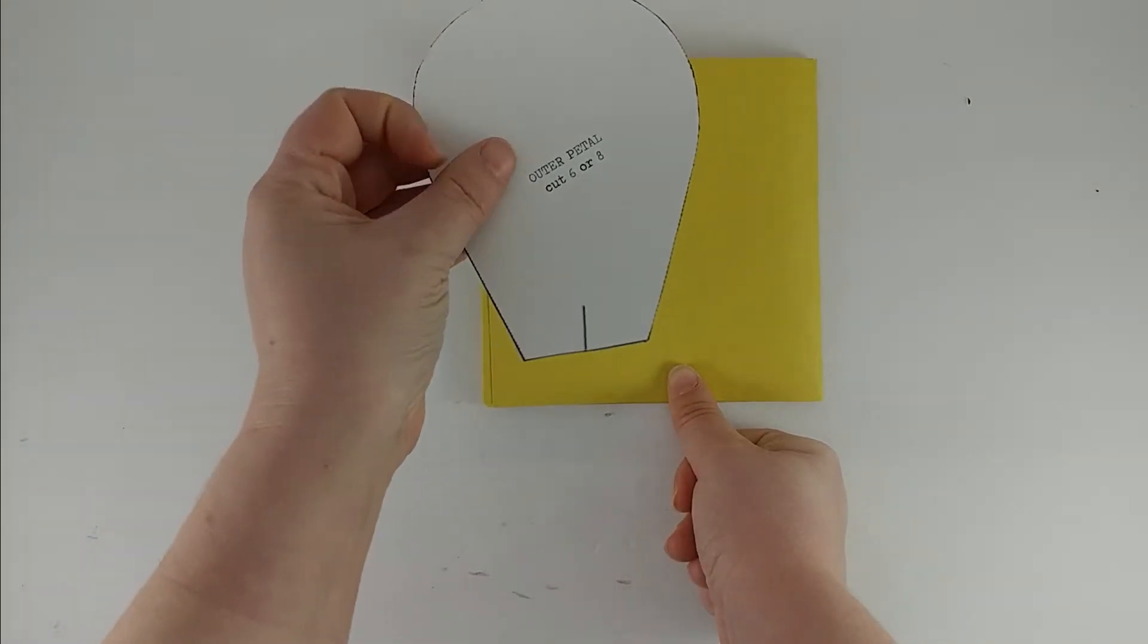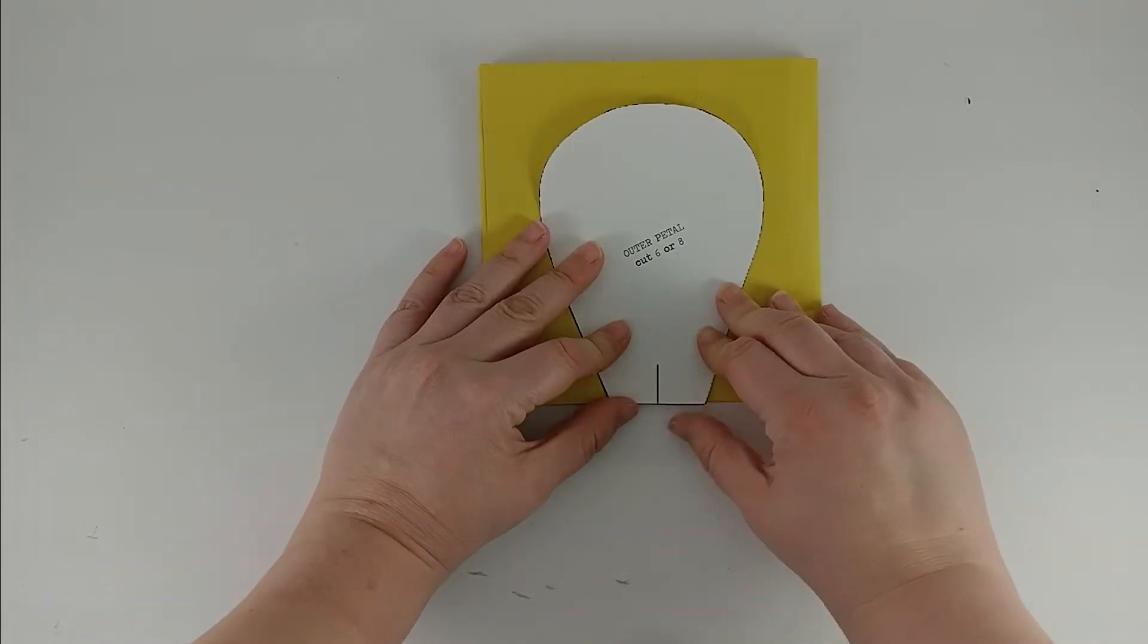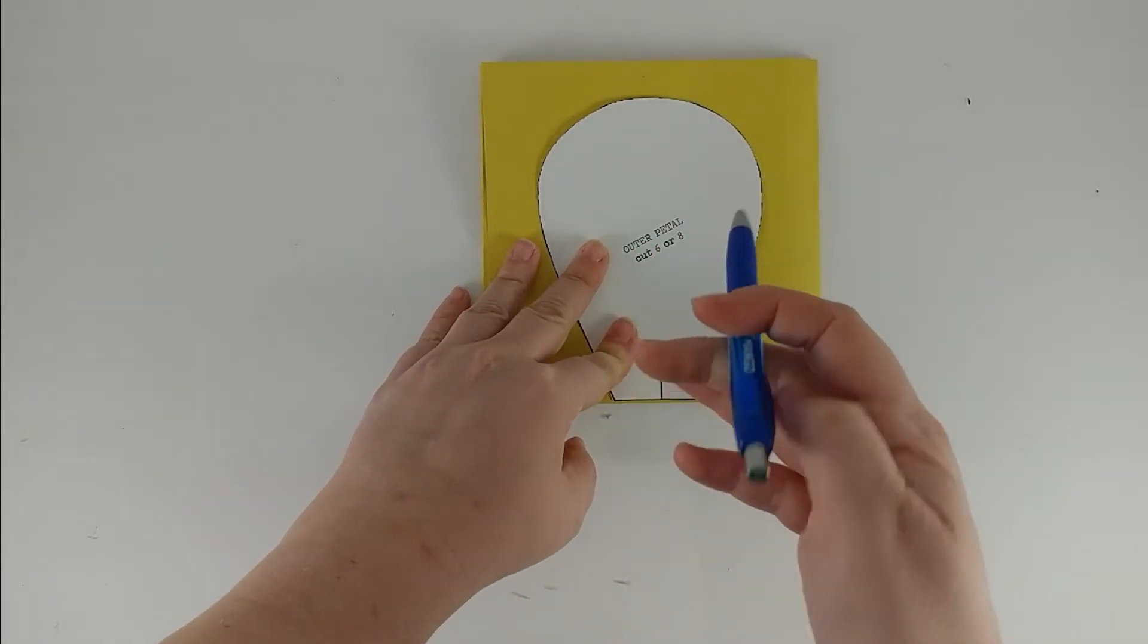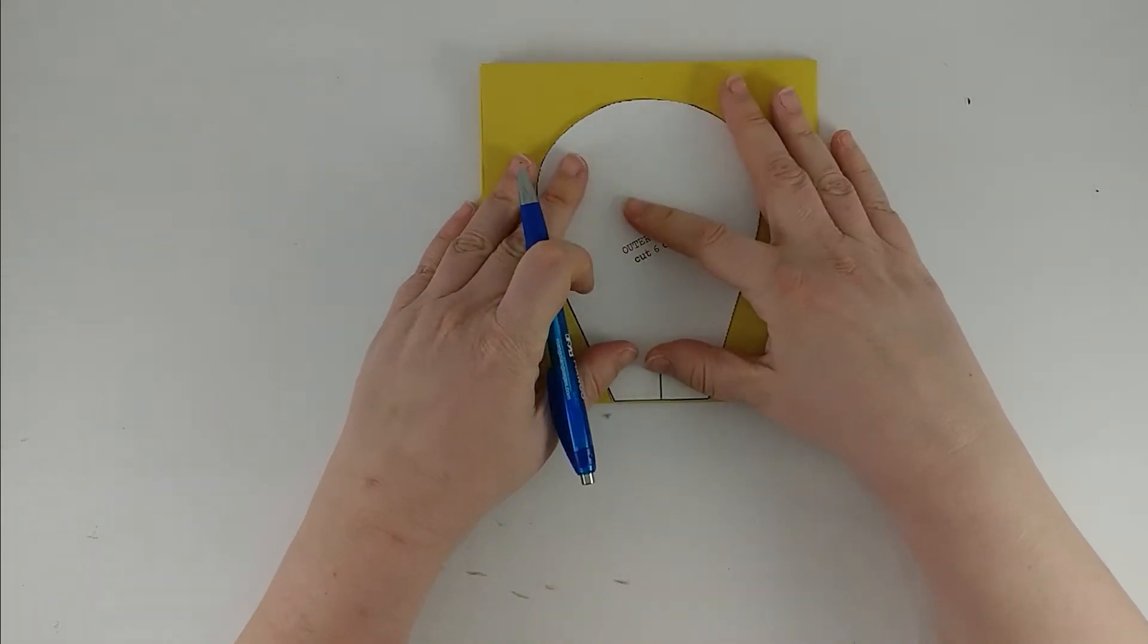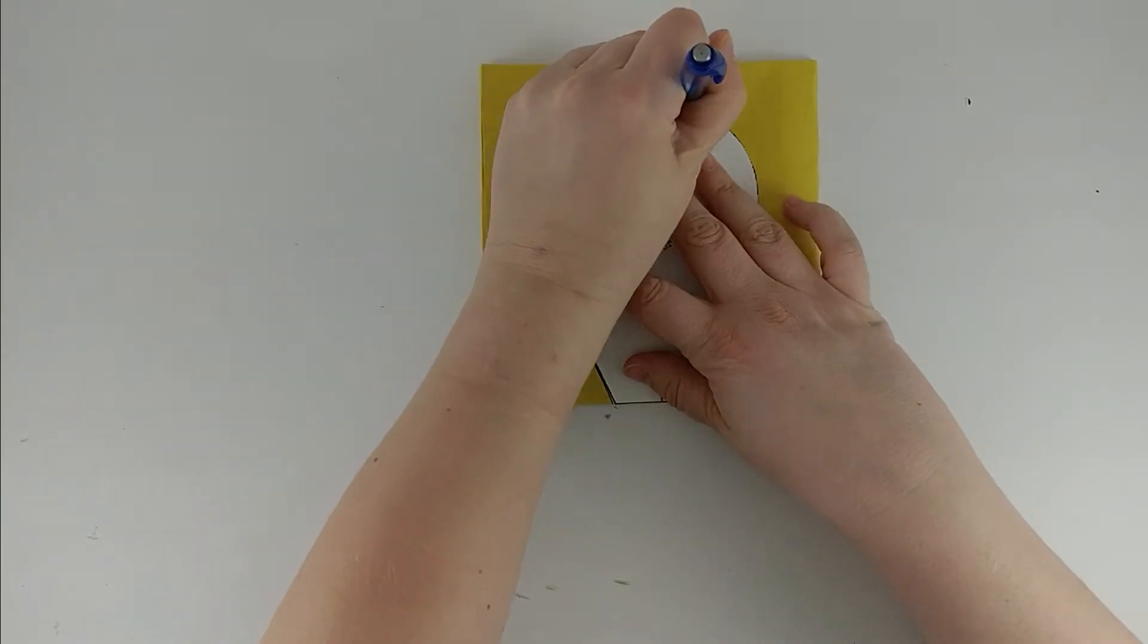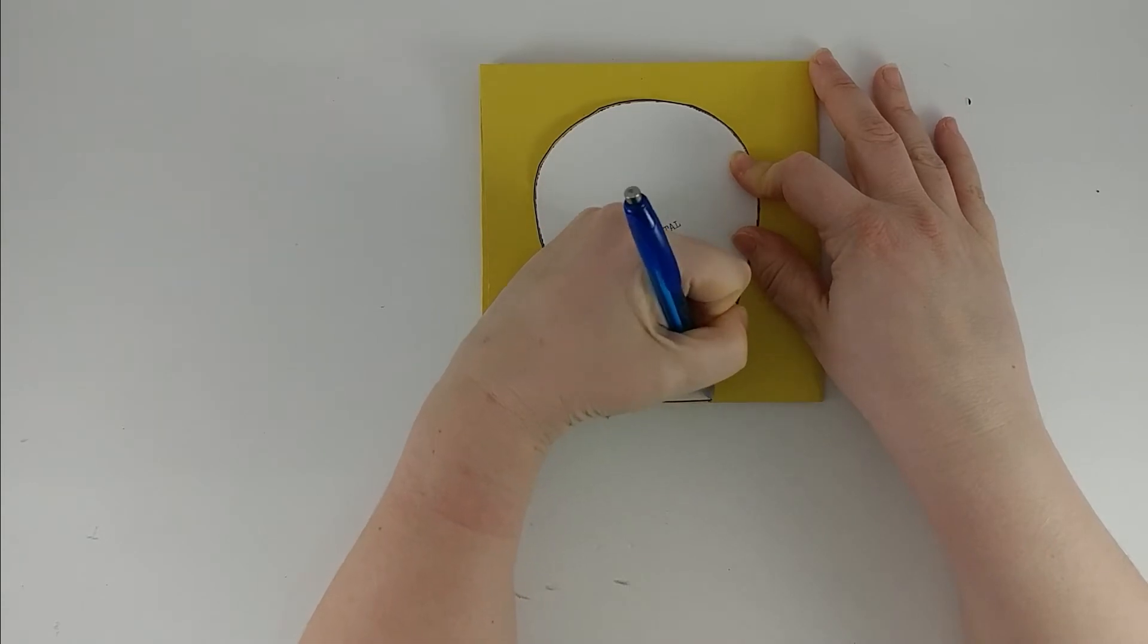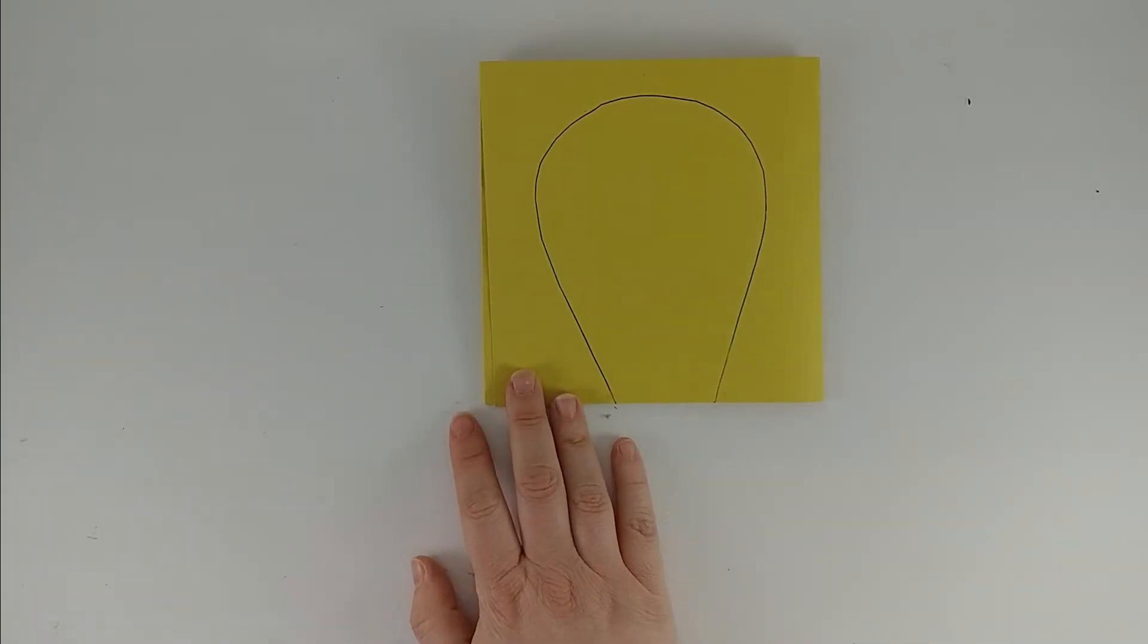I'm going to take my largest petal and put it right on the edge, and then using a pen or a pencil, just trace around it. I do recommend using a pencil and a light touch so that you can erase any pencil marks later if you need to. I'm using a pen to make sure it shows up on camera.